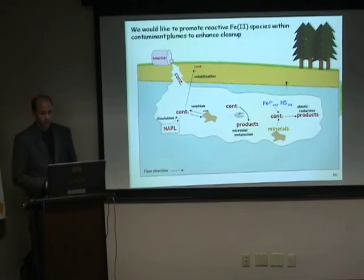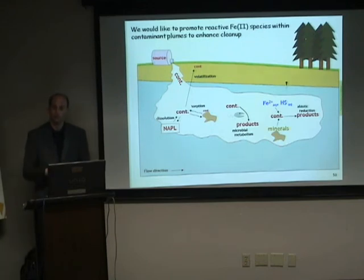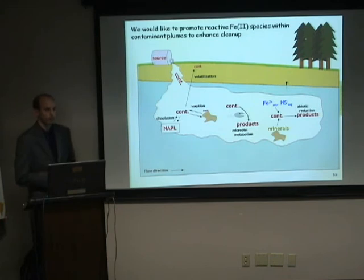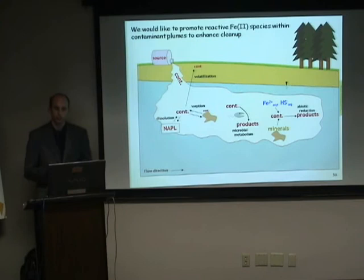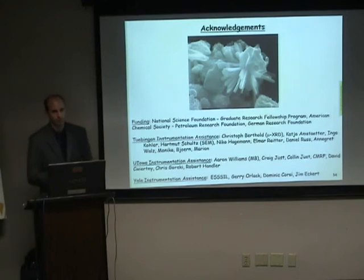Overall, we would like to promote reactive Fe2+ species within groundwater contaminant plumes. Some people have tried this by stimulating native bacteria to reduce Fe3+ and form more reactive species; others have injected iron directly into groundwater plumes. It is still a challenge to create very favorable in-situ conditions to rapidly transform these contaminants in order to improve groundwater quality. I'd like to thank everybody who has helped me in this work.